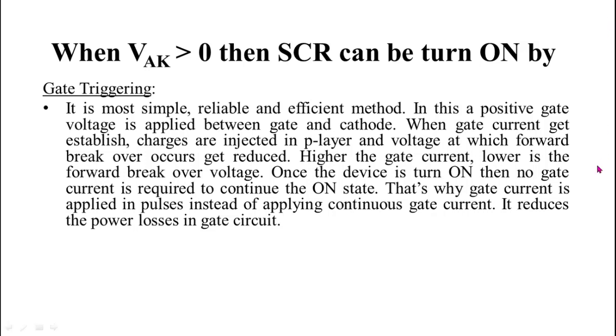This reverse bias junction has stored charges in its depletion region. So when gate current gets established, charges are injected in P layer and they neutralize these stored charges. Due to this, thyristor get turn on and it get turn on much before the forward break over voltage VBO is reached. This method has also been discussed in my previous lecture.